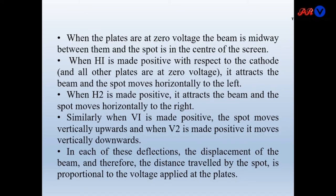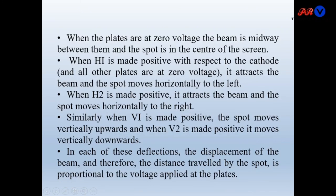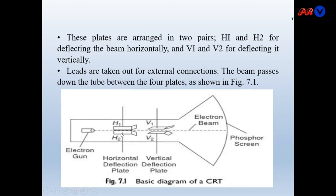Now we will discuss how these plates affect the spot position. When the plates are at zero voltage, the beam is midway between them and the spot is at the center of the screen. When H1 is made positive with respect to the cathode and all other plates are at zero voltage — H1 being on the left side of the tube — it attracts the beam and the spot moves horizontally to the left. When H2 is positive, then the beam will move to the right.